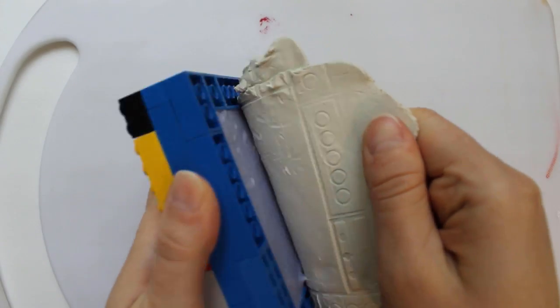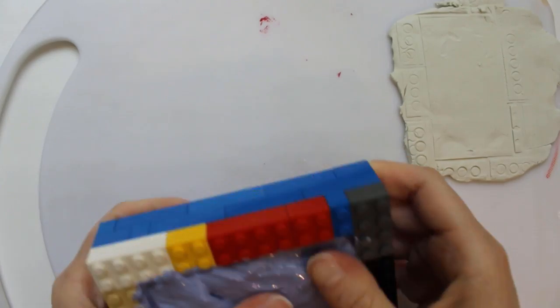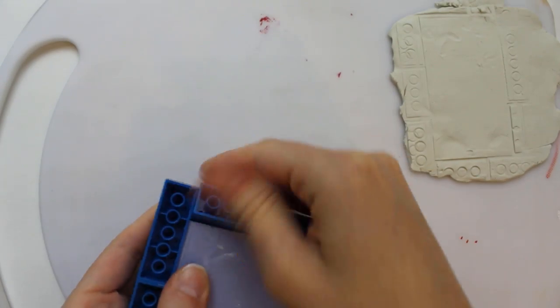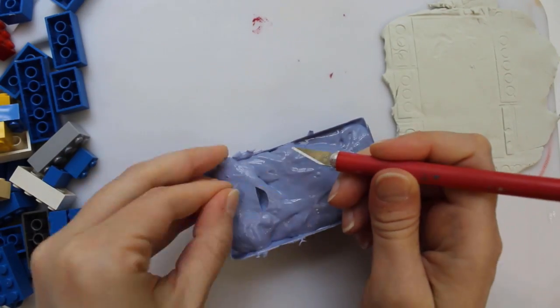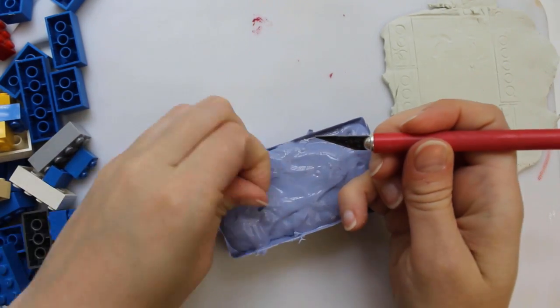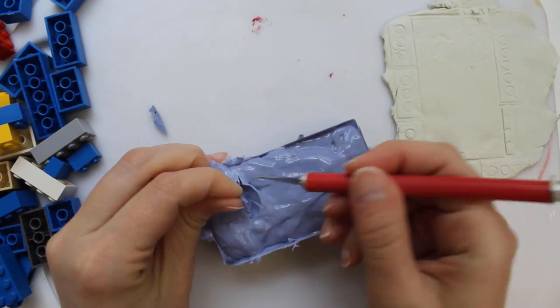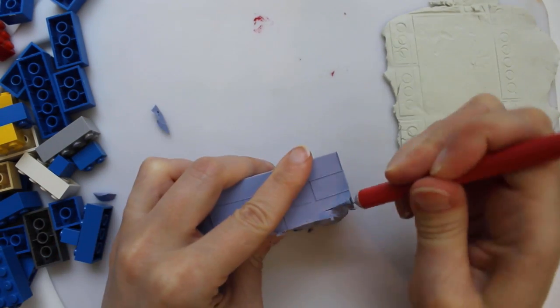I let the mold cure overnight, then remove the clay and Lego pieces. I'd planned to make this a two-part mold, but hopefully it'll work as a one-part mold just as well. I cut down through the silicone until I find the heel, then carefully carve it out. This will be where I fill the mold.